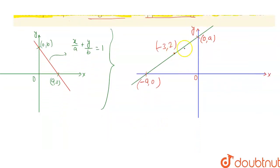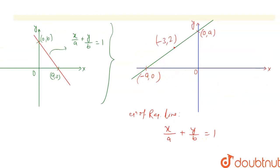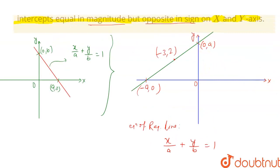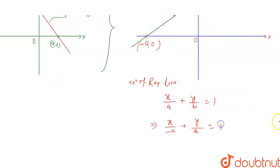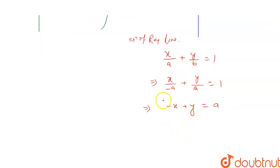Now, what will be the equation of this line? According to the intercept form, the equation of the required line is x upon a plus y upon b equals 1. Here 'a' (the x-intercept) is minus a, and 'b' (the y-intercept) is plus a. So the equation becomes x upon minus a plus y upon a equals 1, which simplifies to minus x plus y equals a.